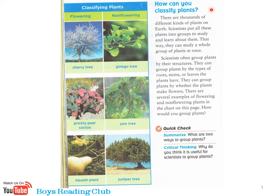How can you classify plants? There are thousands of different kinds of plants on Earth. Scientists put all these plants into groups to study and learn about them. That way, we can study a whole group of plants at once.